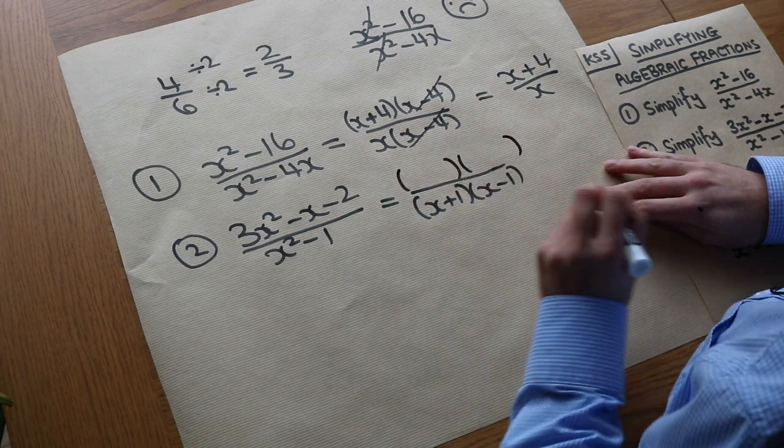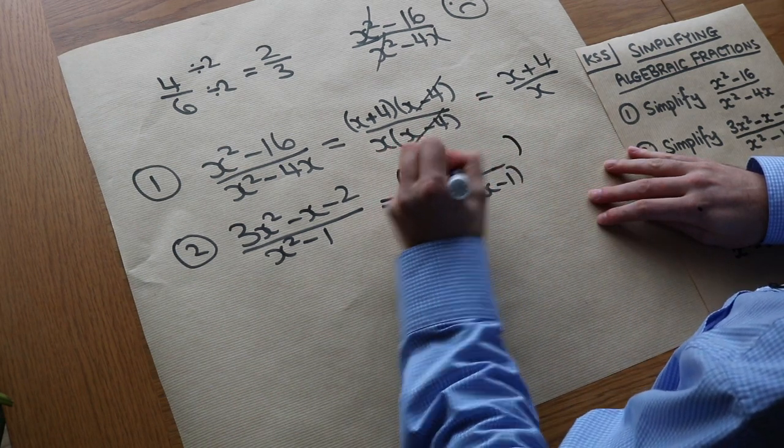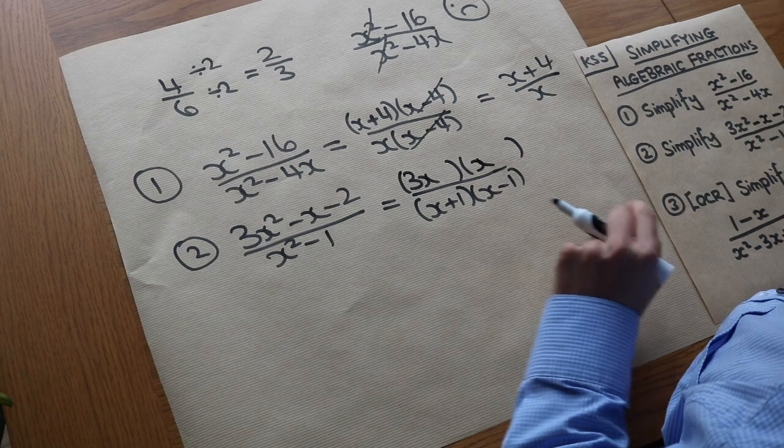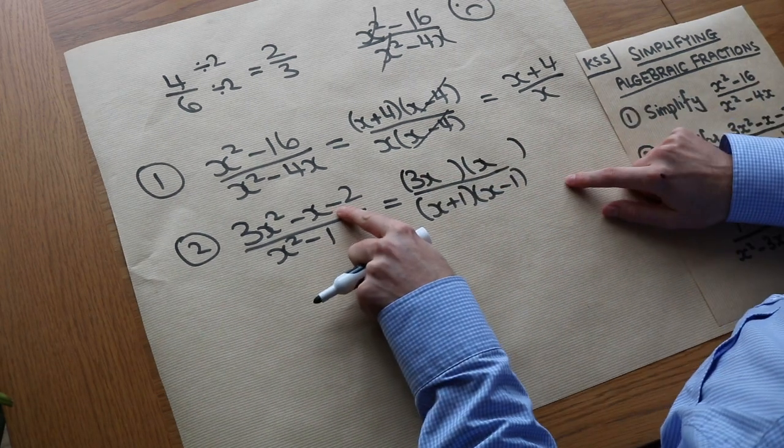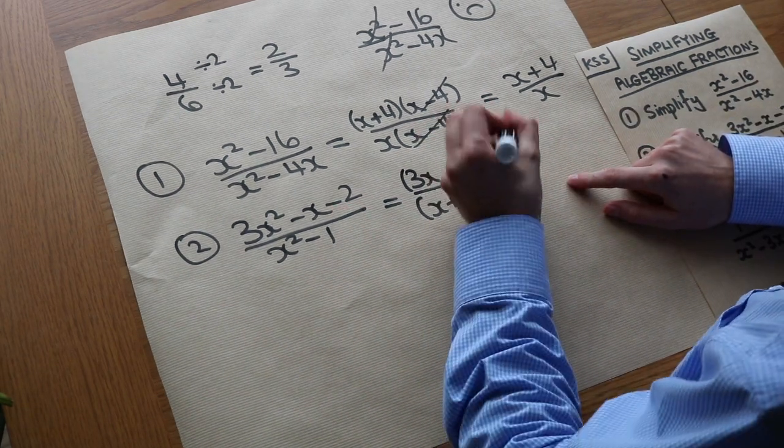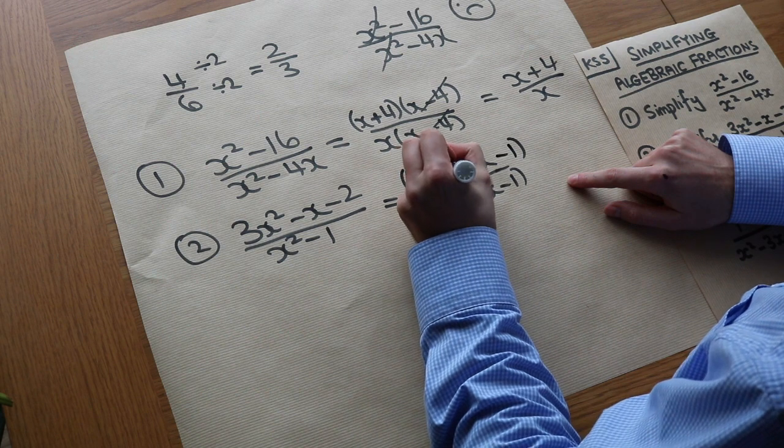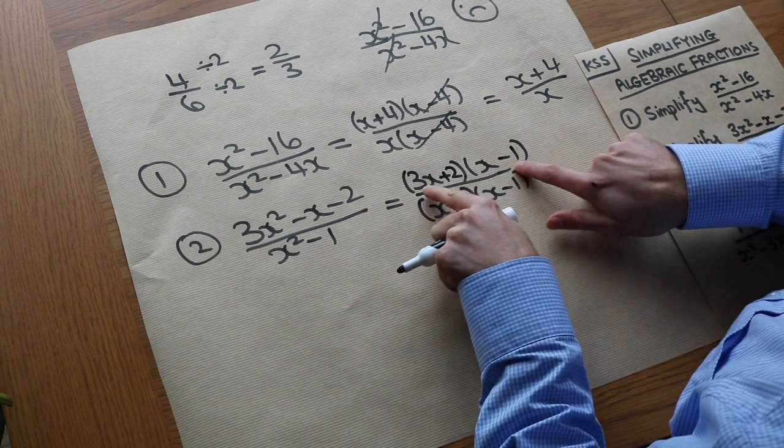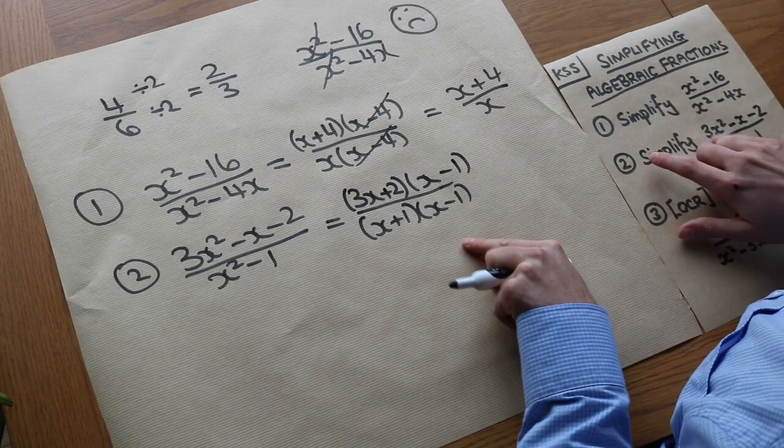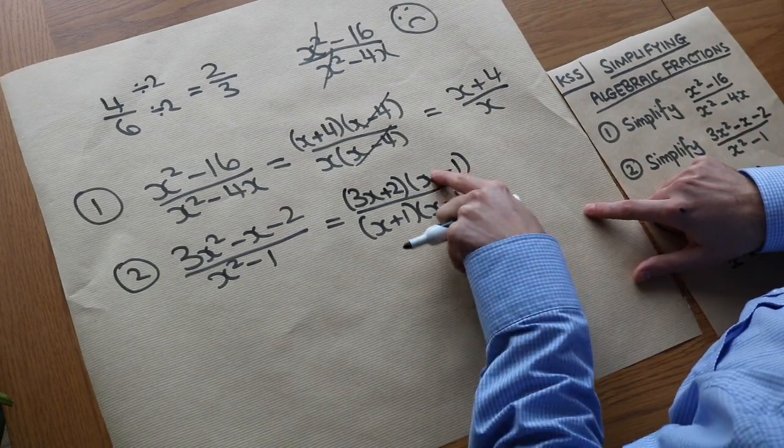You could split the middle term here, but I'm just going to guess the two brackets. We've got 3x and x to give the 3x squared, and these two numbers have to multiply to give minus 2. And I can see that it's going to be minus 1 and plus 2 will work, because you've got 2x minus 3x is indeed minus x.